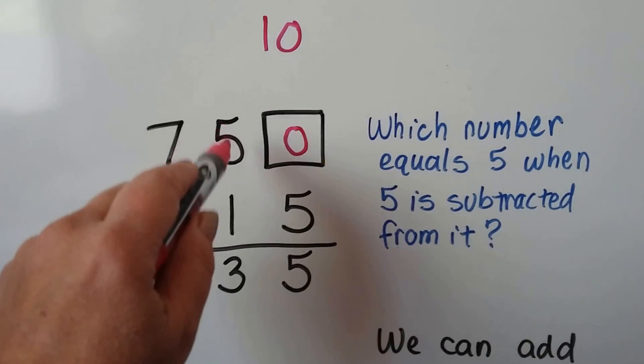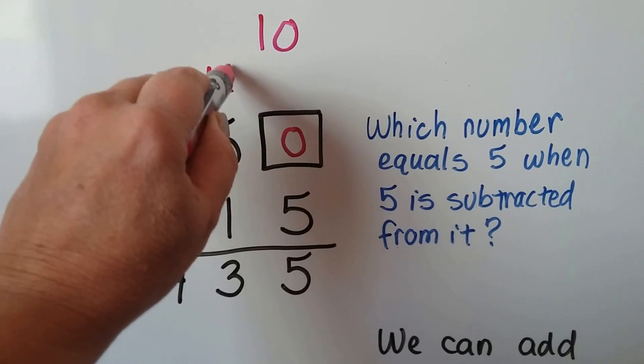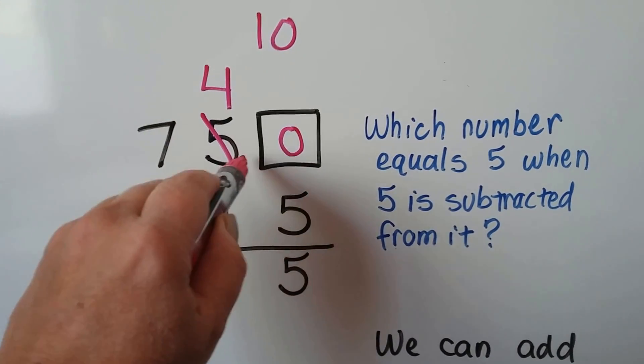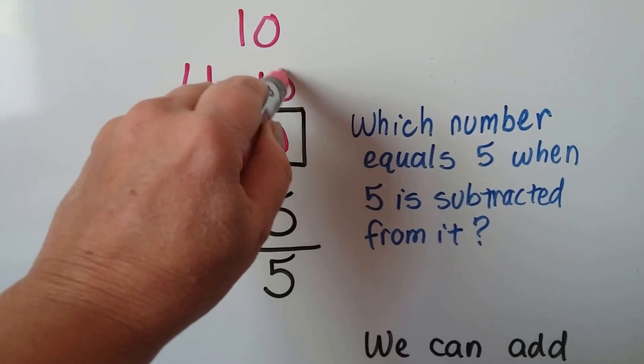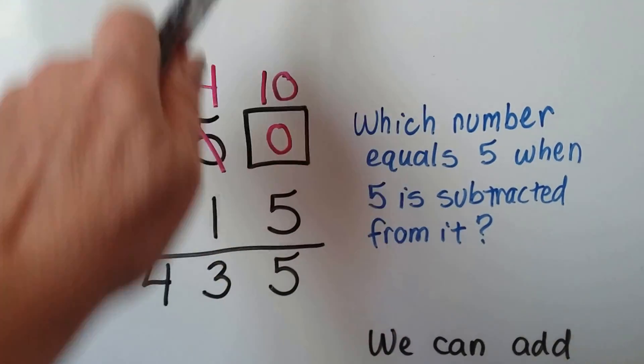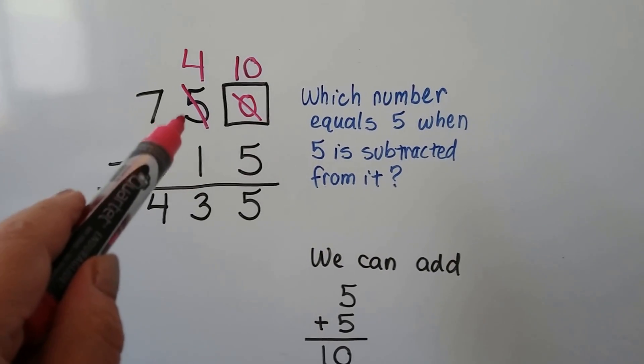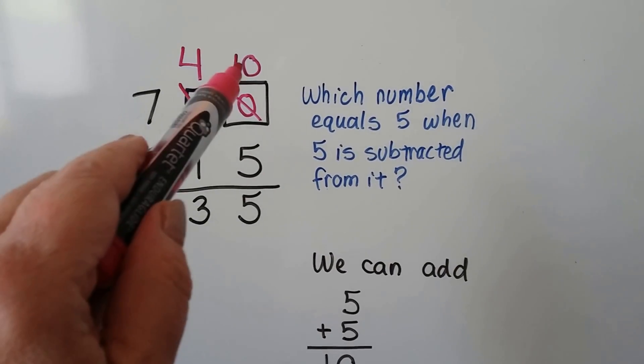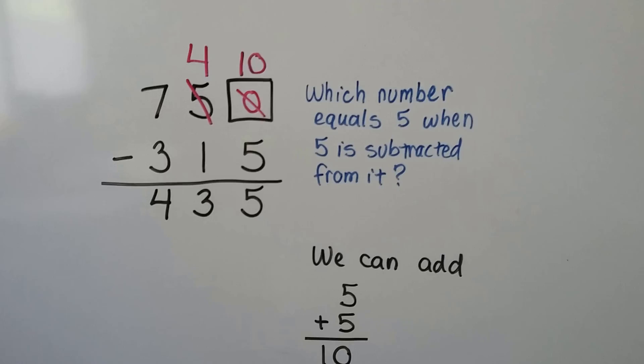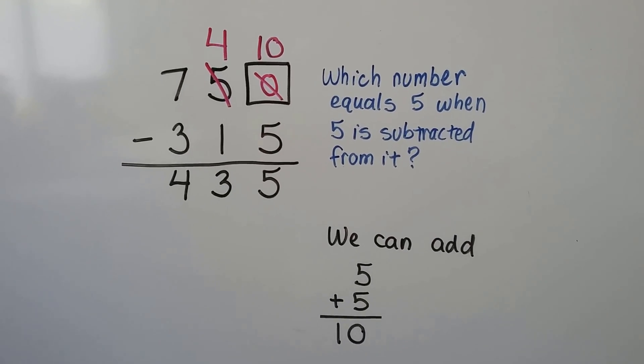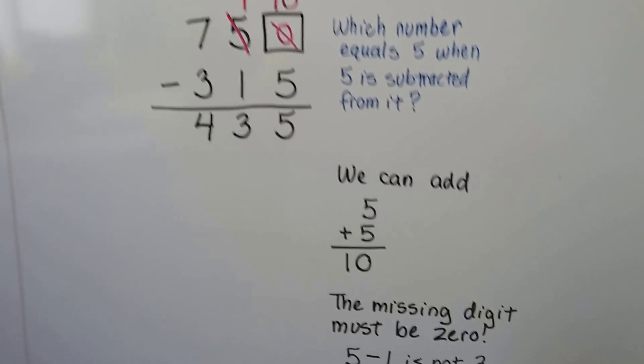Well, 1 plus 3 is 4. That means this must have been a 4. So what happened was they regrouped from the tens place and that became a 10.